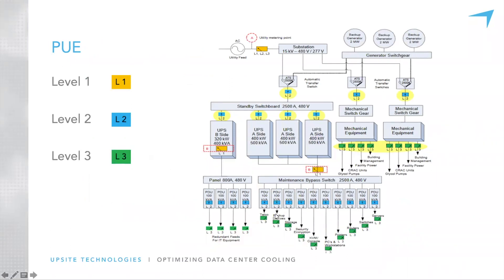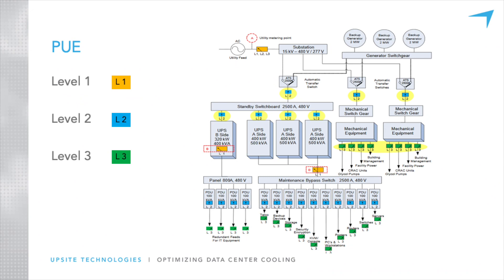This schematic shows where Level 1, Level 2, and Level 3 measurements are taken — the UPS for Level 1, floor PDUs for Level 2, and the actual power strips within the racks for Level 3. Is any one level better than the other? Level 3 gives the most granularity and real-time information. But whatever level you can accurately measure and are comfortable with, doing it at the regular intervals recommended by the Green Grid will not be wrong and will help you gain efficiency in your data center.